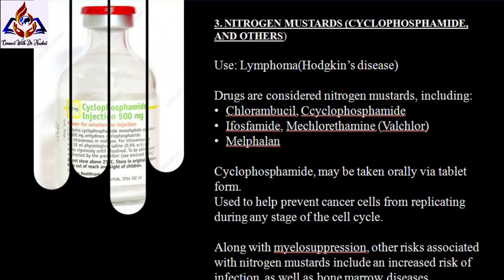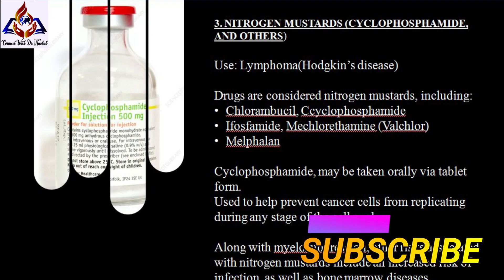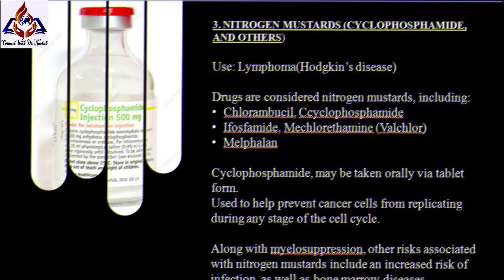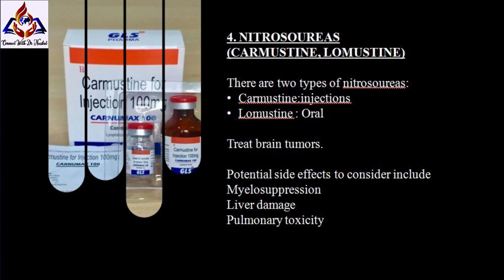Third, nitrogen mustards — drug name is cyclophosphamide. Nitrogen mustards are primarily used in the treatment of lymphoma, including Hodgkin's disease. Several drugs are considered nitrogen mustards, including chlorambucil, cyclophosphamide, ifosfamide, mechlorethamine, and melphalan. Certain types such as cyclophosphamide may be taken orally via tablet form. Nitrogen mustards may be used to help prevent cancer cells from replicating during any stage of the cell cycle. Risks include myelosuppression, increased risk of infection, and bone marrow diseases.